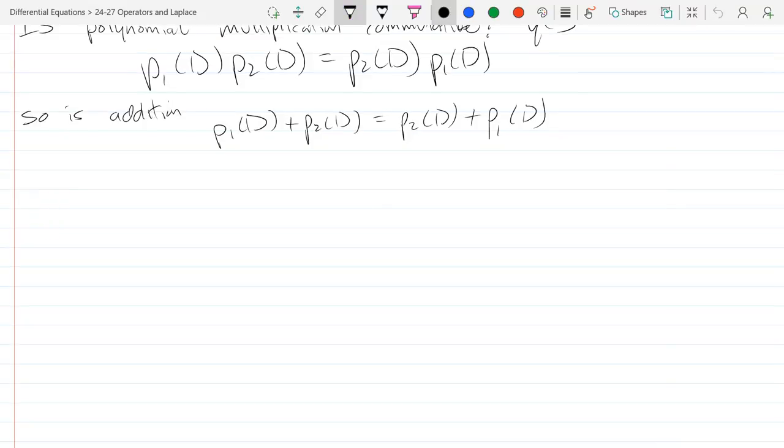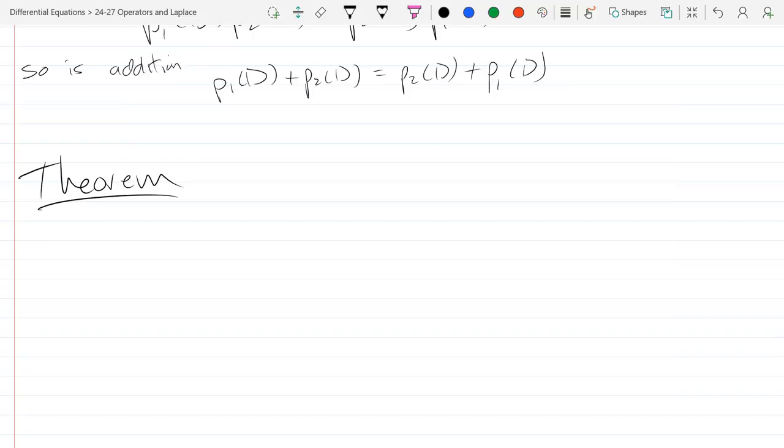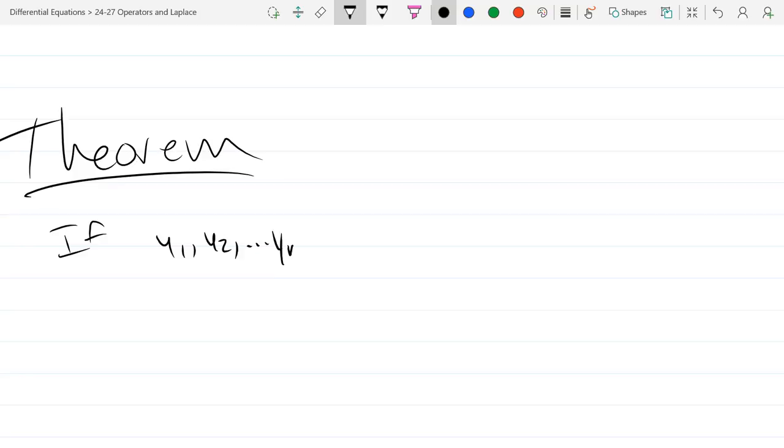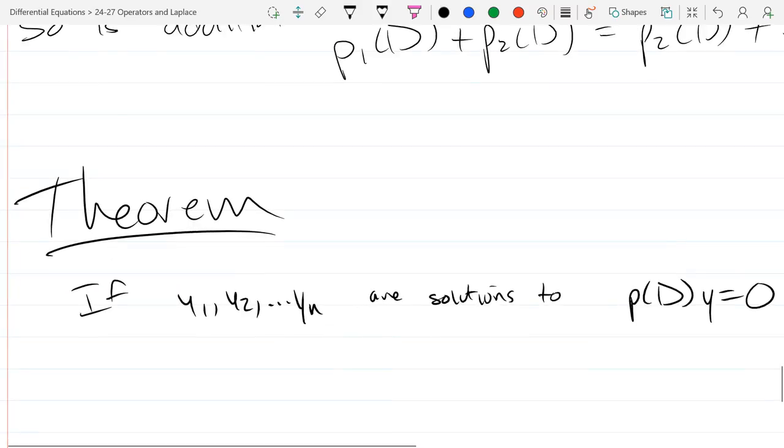So with this theorem we're going to rewrite an ODE. So if Y1, Y2 up through Yn, if these are solutions to, so I just wrote down an ODE in polynomial operator form. So what do I mean by P(D) of Y? Some polynomial, a polynomial derivative operator.